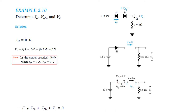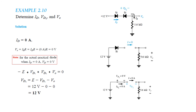Applying KVL: minus E plus VD1 plus VD2 plus V0 equals 0. Therefore VD2 equals E minus VD1 minus V0. E is 12V, VD1 is 0V (since no current flows), V0 is also 0V, therefore VD2 equals 12V.